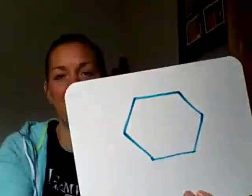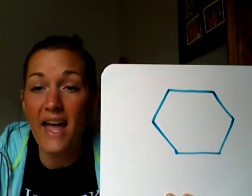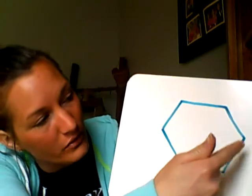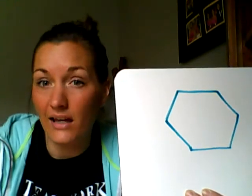The next one I want to look at is a six-sided shape. Mrs. Porter is not always the best drawer, so bear with me. This is called a hexagon. When we have six sides, it is called a hexagon. If you drew anything that has six sides — it doesn't have to look like this — you would count them: one, two, three, four, five, six. It is called a hexagon. No matter what it looks like, if it has six sides, it's a hexagon.